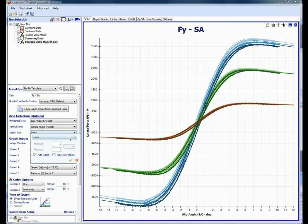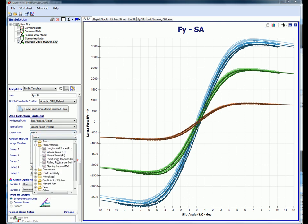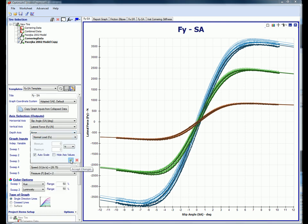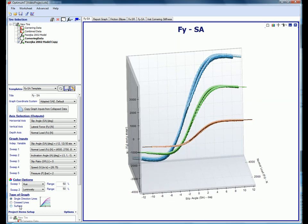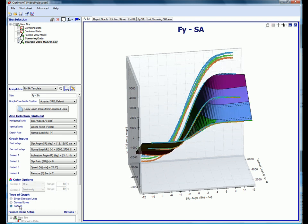We'll make this graph into a 3D graph now. We'll make the depth axis represent the vertical load. Now the model and data are shown in three dimensions. We can also view tire models as surfaces instead of lines. This type of plot is sometimes more useful in three dimensions than a line plot.